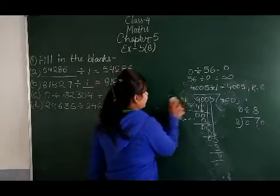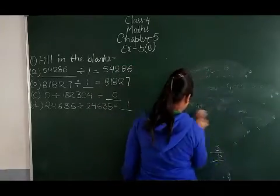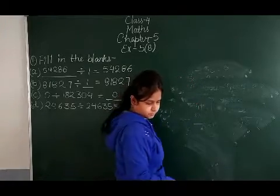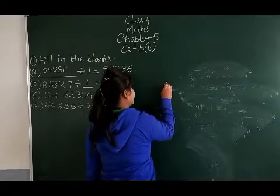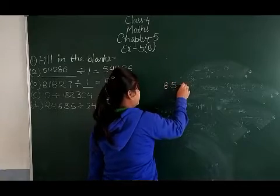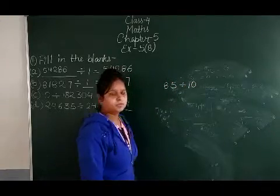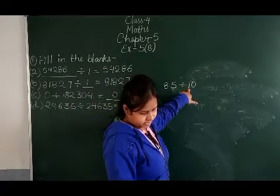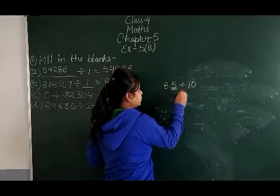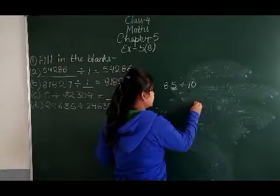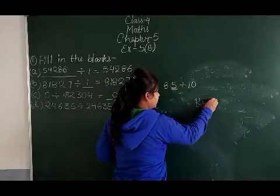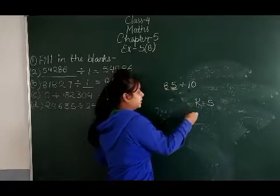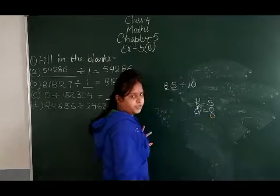When we divide a number by 10, for example the number 85 divided by 10: the one's place digit of the dividend becomes the remainder. So the remainder is 5, and the rest of the number becomes the quotient.